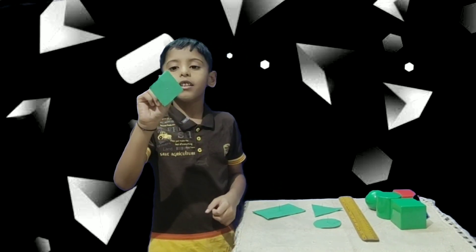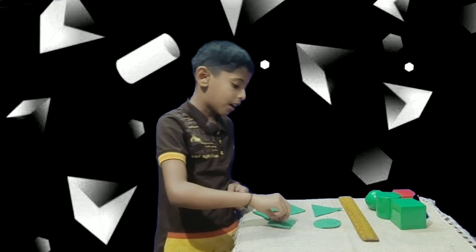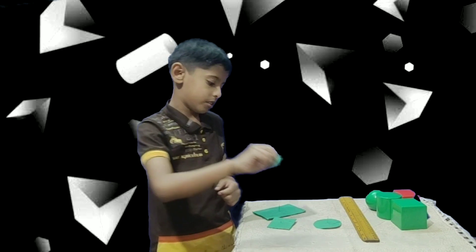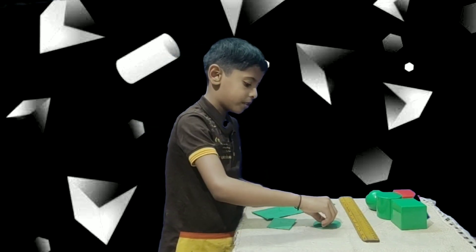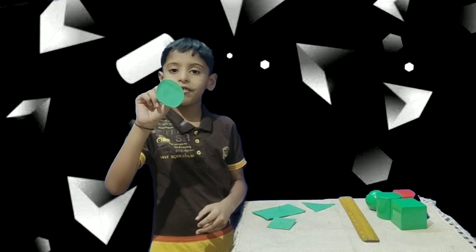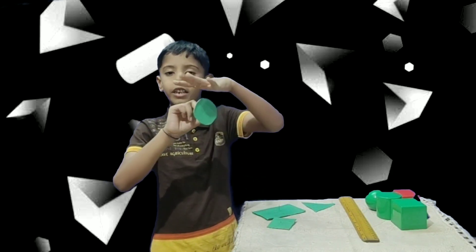The square has four sides and four corners. Triangle has three sides and three corners. But circle does not have corners because it does not have straight lines.